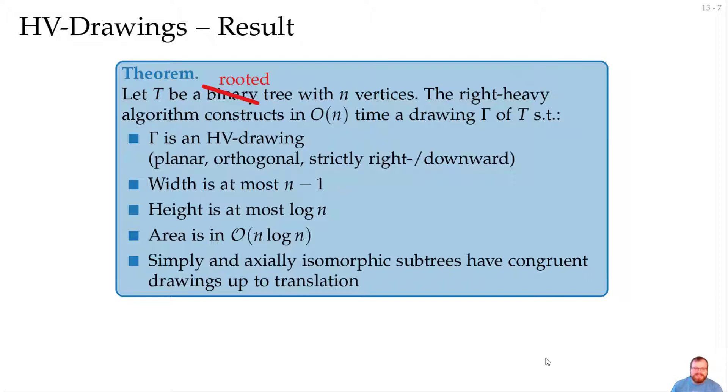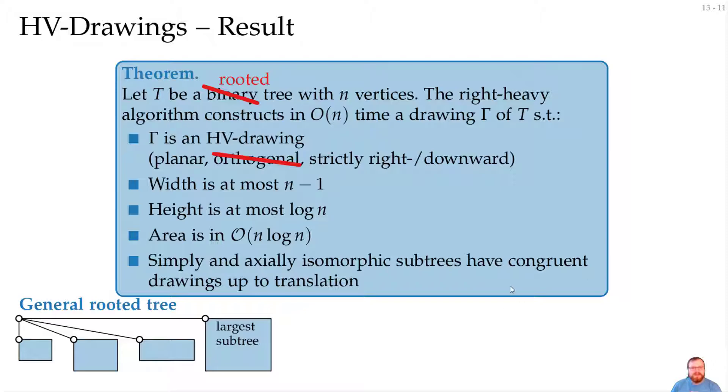This again can be generalized to general rooted trees, with some compromises. So we start at some vertex, we take the larger subtree, we put it to the right, but now there is only one vertical connection we can take, so for all the other subtrees, we might have to draw them diagonally with any angle. So we lose the orthogonal style here. To make sure that these subtrees have congruent drawings, we also have to make sure that these are not ordered anyway, but this is actually the second largest, this is the third largest, this is the smallest and so on, otherwise we don't get this property.